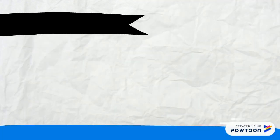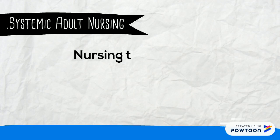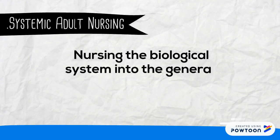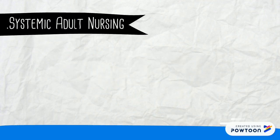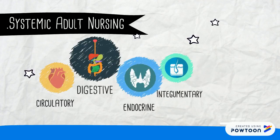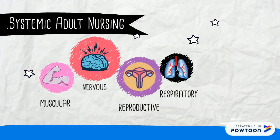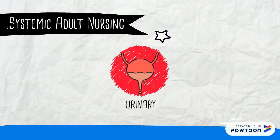Application of the system theory: Systemic adult nursing integrates the biological systems into a general systems theory of nursing such as circulatory, digestive, endocrine, integumentary, lymphatic, muscular system, nervous, reproductive, respiratory, skeletal, and urinary.